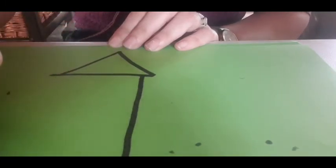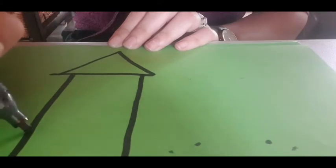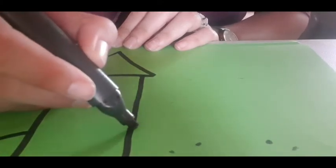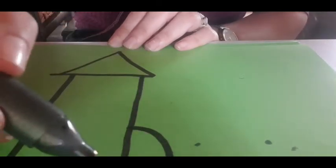Then a rectangle for the body of my rocket, and some quarter circles to make my shape look like a rocket.